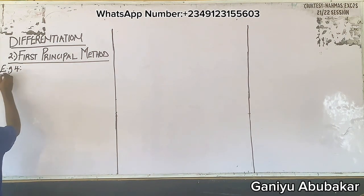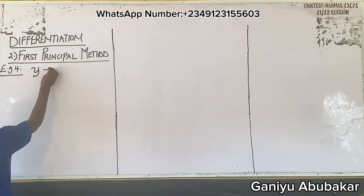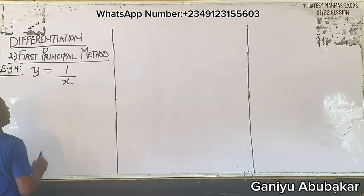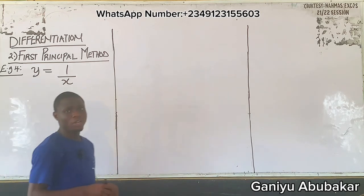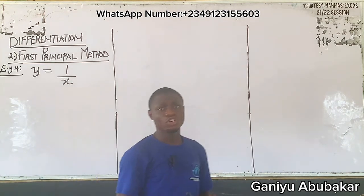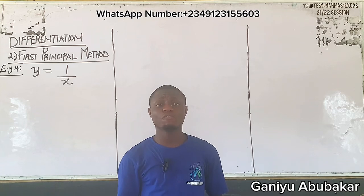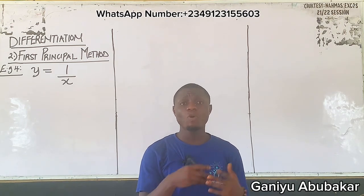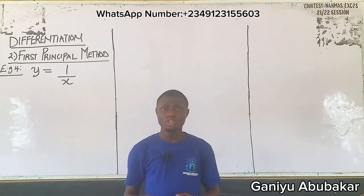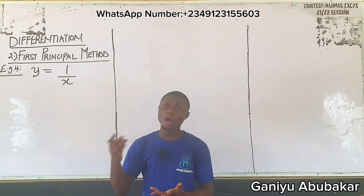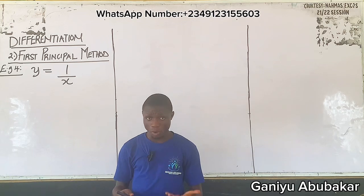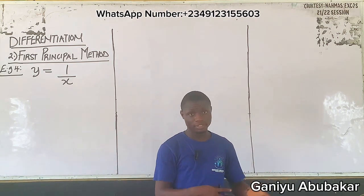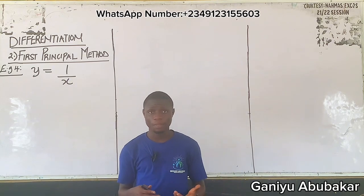In Example 4, let's say y is equal to 1 over x. In functional form, how do you find the derivative of 1/x using the first principle method of differentiation? The task is quite simple. The key concept in first principle is that y gets a change in y, and x gets a change in x.